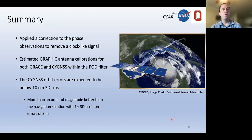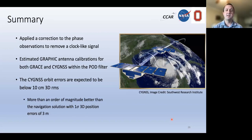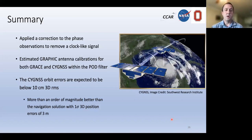In summary: we applied a correction to phase observations to remove a clock-like signal that enabled processing the GRAPHIC observable. We estimated antenna calibrations for both GRAPHIC and code-only solutions independently for GRACE and Cygnus, applied within the filter. The final Cygnus orbit errors are expected to be below 10 cm 3D RMS — more than an order of magnitude better than the navigation solution, which has one-sigma 3D position errors on the order of three meters. We are very confident we have achieved the goal of greatly improving the Cygnus orbit solution.